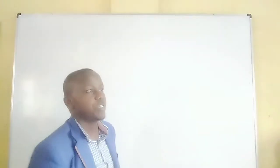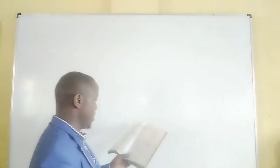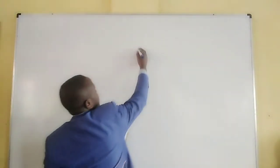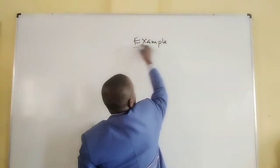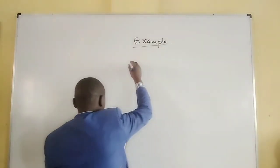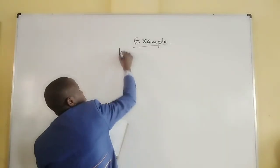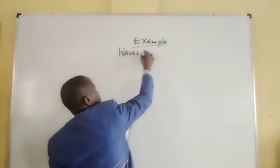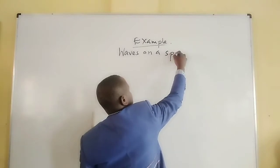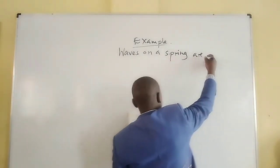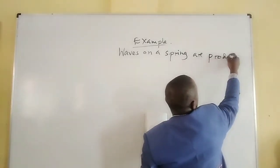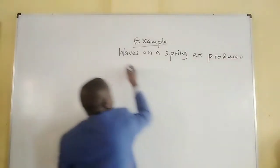I want to read an example which says: Waves on a spring are produced at the rate of 20 wavelengths in five seconds.